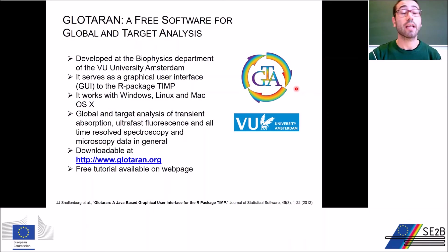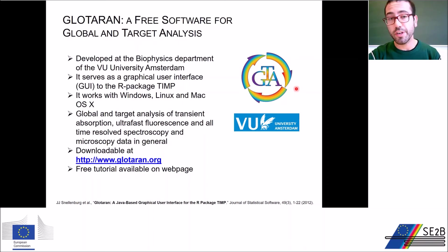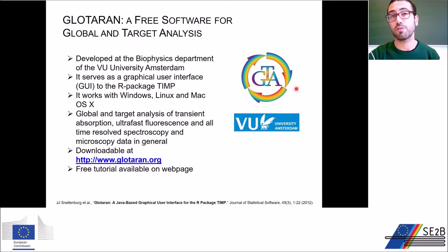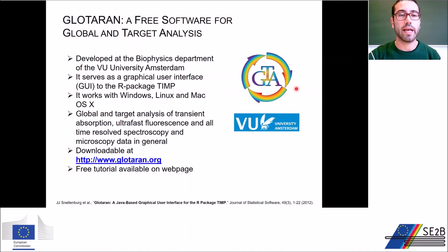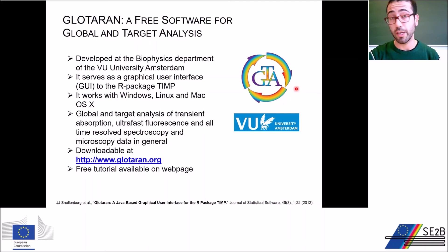I want to conclude by advertising a very valuable free software for global and target analysis named Glotaran, which was developed at my university, the Free University in Amsterdam. It serves as a graphical user interface to the R package TIMP, making it very user-friendly. It works on many different operating systems and can perform global and target analysis of all kinds of time-resolved measurements — not just fluorescence, but also transient absorption and microscopy data. It can be downloaded for free at the website shown here.